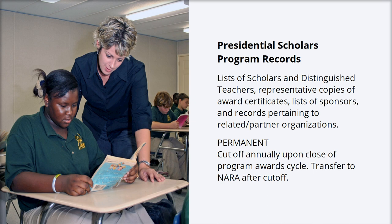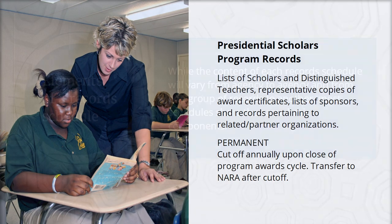A record schedule reads: Presidential Scholars Program records — lists of scholars and distinguished teachers, representative copies of award certificates, lists of sponsors, and records pertaining to related partner organizations. Permanent: cut off annually upon close of program award cycle. Transfer to NARA after cut off.